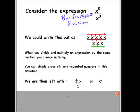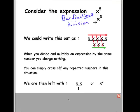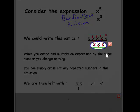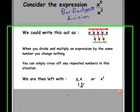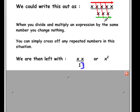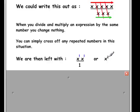We're then left with x times x over 1. It's really important to remember that when you cross everything out in the denominator, you leave yourself with 1 in the denominator of your result. Of course, whenever we have anything divided by 1, we just leave that as the number itself. So we have x multiplied by x, we add those exponents of 1, which are imaginary, and we get to our exponent of 2.